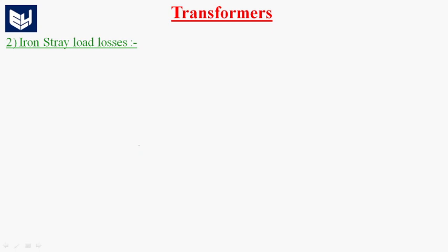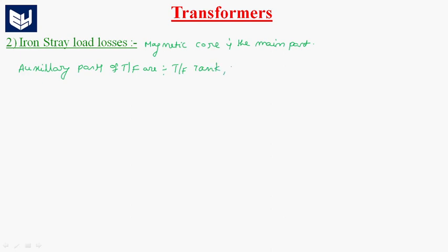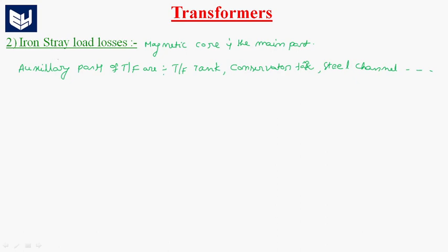Next is iron stray load losses. The main iron part of the transformer is the magnetic core. Along with the magnetic core, the auxiliary parts of the transformer are: transformer tank (the entire body), conservator tank, and steel channels for the aid to flow. All these are auxiliary parts of the transformer.